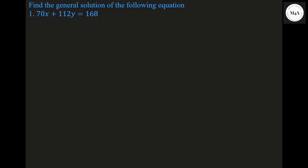General solution means you have to find the initial solutions, then add on the expression for the general equation. So, given: 70x plus 112y equal to 168. What is the first step for a Diophantine equation? First step is to find the GCD.